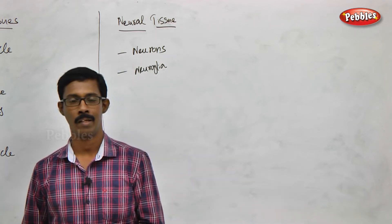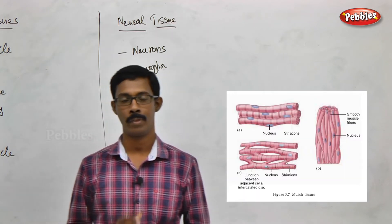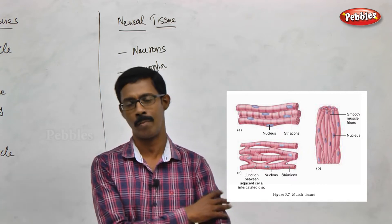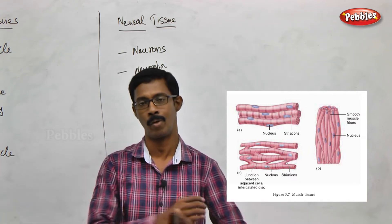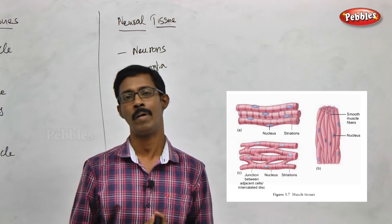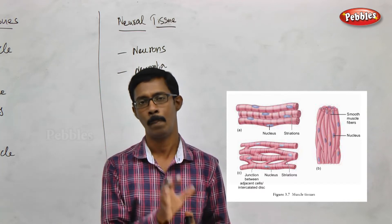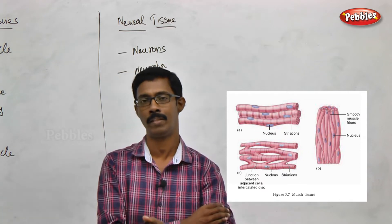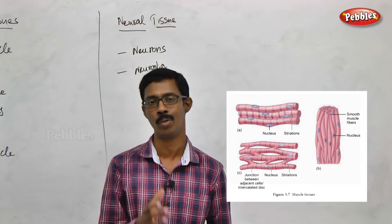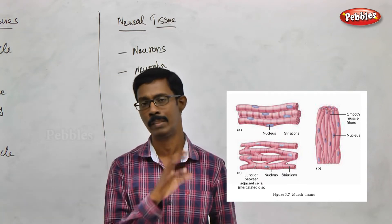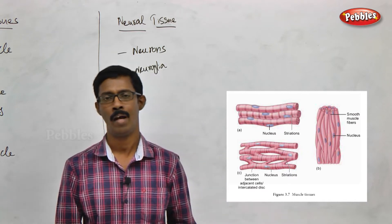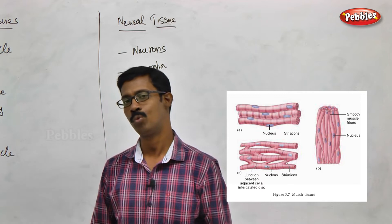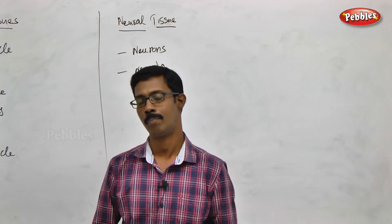The tissue type is muscular tissue. When we talk about muscular tissue, we are talking about muscles — biceps and similar muscles. Muscular tissue is a different type. We have three subtypes: skeletal muscles, smooth muscles, and cardiac muscles.